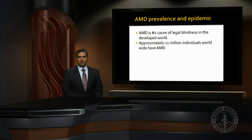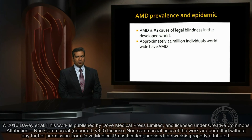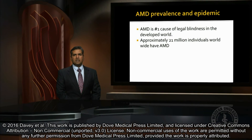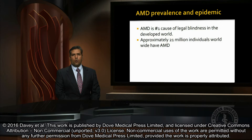Age-related macular degeneration is at epidemic proportions. It is the number one cause of legal blindness in the developed world. Macular pigment is hypothesized to be one of the alterable risk factors in the development and progression of macular degeneration.